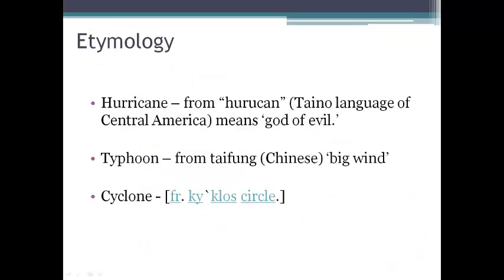The etymology of the word hurricane comes from a Taino language from a tribe in Central America — the word 'huracan,' which means 'god of evil.' In the Pacific Ocean, we call them typhoons; that word comes from the Chinese, meaning 'big wind.' And the word cyclone, which we use for a low pressure system, is from the Greek word 'kyklos,' which means 'circle.'